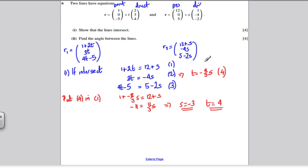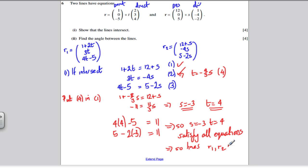Now that means, what equations have we used? We've used equation 1 and equation 2. Let's just check, T is 4 and S is minus 3, works in these equations. So 4T would be 4 times 4 minus 5, which would be 16 minus 5, which is 11. And on the other side, we would get 5 minus 2 lots of minus 3, minus 2 times minus 3 is 6, 5 plus 6 is 11. So, S equals minus 3, T equals 4, satisfy all equations. And therefore the lines meet. So lines R1 and R2 meet as required.